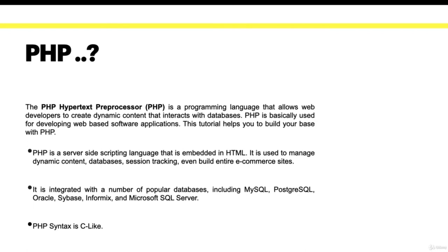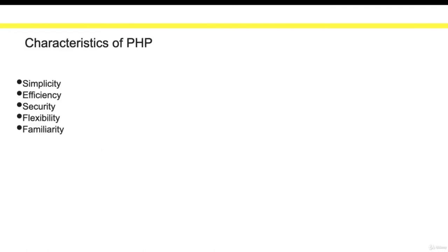PHP syntax is similar to the C language. The basic syntax covers variables, constants, declarations, operators, and more. Key characteristics of PHP include simplicity, efficiency, security — which helps develop and maintain website security — flexibility to switch and manage code, familiarity with syntactical things, and the ability to develop full-stack websites from the front end to databases.